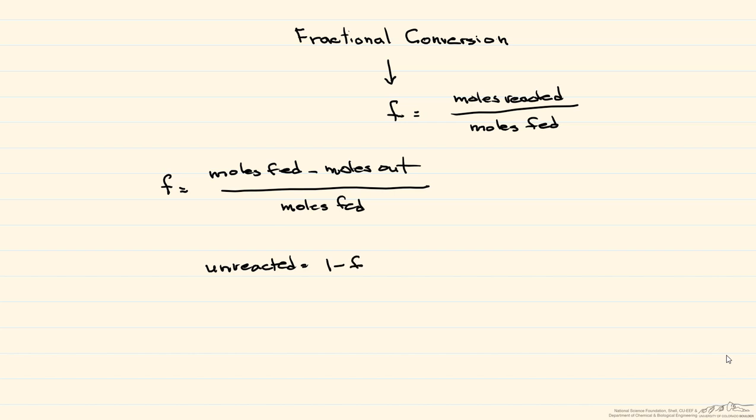That intuitively makes sense where one is 100%, but we can also look at it mathematically. So the fraction not converted, our one minus F, is equal to our moles out divided by our moles fed.